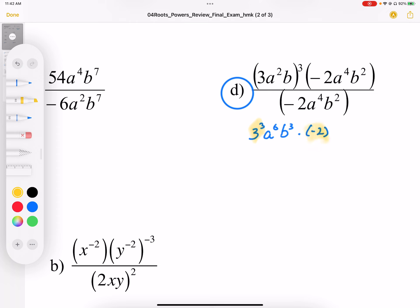Then we're going to group the b's and a's together as well. So we have a to the power of 4, b squared, and that's all over negative 2a to the 4 b squared.